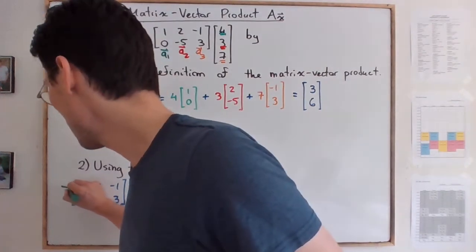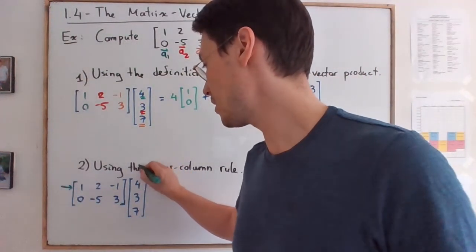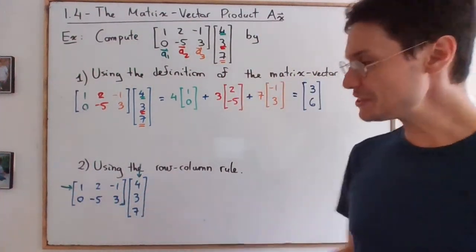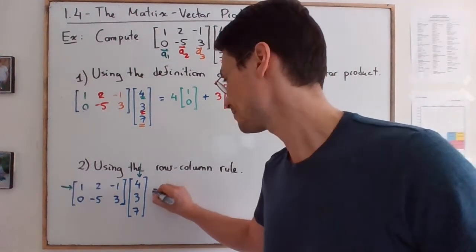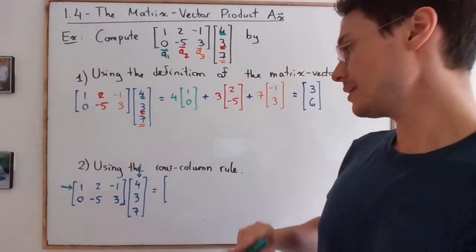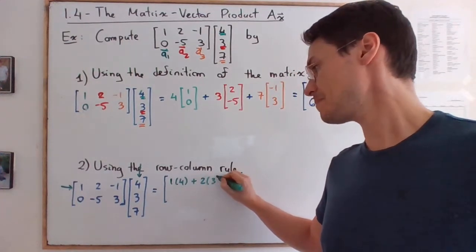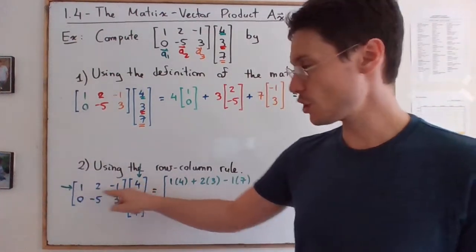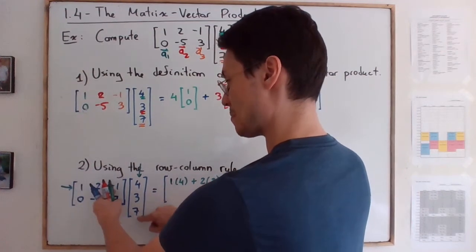What I'm going to color code is, to get the first row of the resulting product, you take the first row of the matrix A with the corresponding components. In other words, you're doing 1 times 4, plus 2 times 3, minus 1 times 7. So you literally just go 4 plus 6 minus 7.